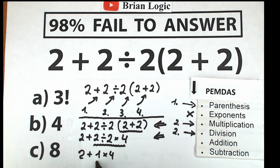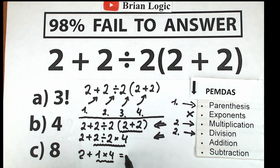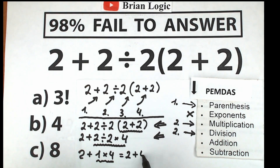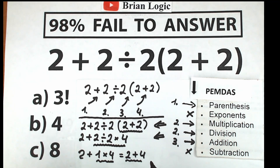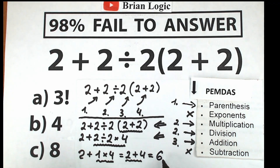We still have multiplication to complete in this step, so we finish it fully: 1 times 4 equals 4. Now we have 2 plus 4. Addition is our last step according to PEMDAS. This is very basic — 2 plus 4 equals 6.